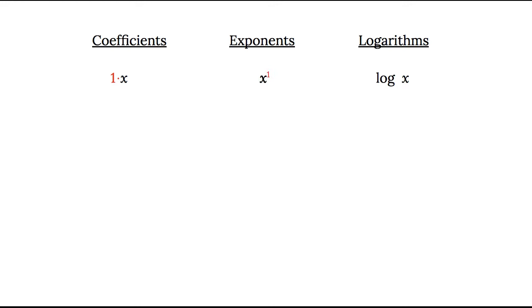Now you might be thinking, well, the first two have a one, so maybe the log is supposed to be a one here. But what I'm getting at is that if you don't see a number as a base for a logarithm, there is a number that you're supposed to assume that it is — and that number is going to be 10.